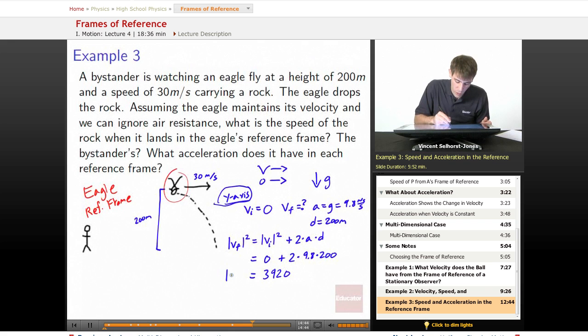We take the square root of that, and that gives us that the speed is going to be equal to 62.6 meters per second. And that tells us what speed the rock is moving at the instant it hits the ground.